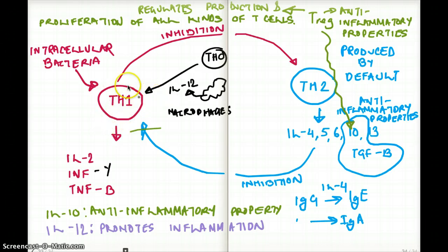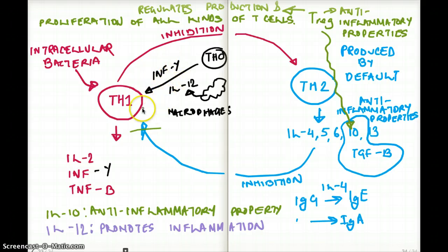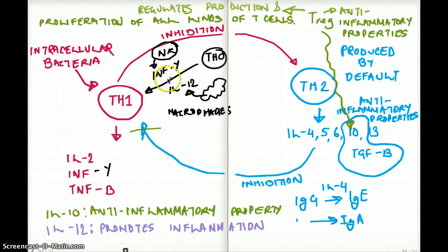Interferon gamma also promotes the production of T helper 1 cells. Interferon gamma is also produced by T helper 1 cells, so T helper 1 cell production is promoted by interferon gamma. But initially, this interferon gamma is coming from the natural killer cells. So natural killer cells also promote inflammation: they produce interferon gamma, which stimulates more T helper 1 cells, which release IL-2, interferon gamma, and TNF-beta — they're all linked.